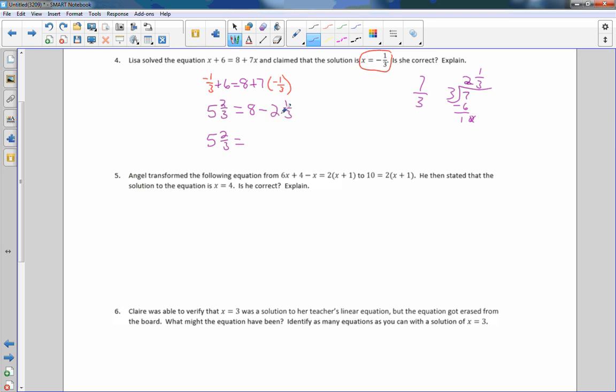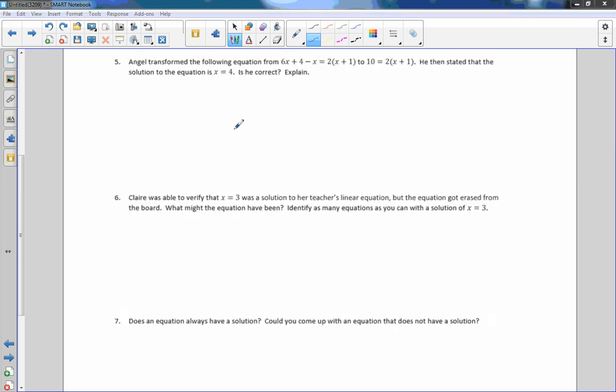8 minus 2 and 1 third. 8 minus 2 is 6. Minus another third is 5 and 2 thirds. Is she correct? Yes. x equals negative 1 third.